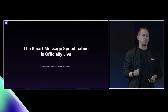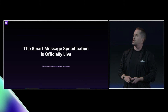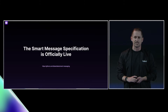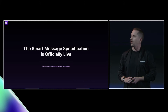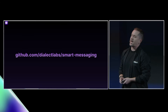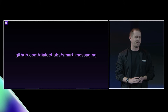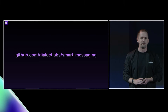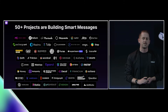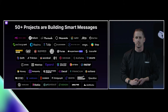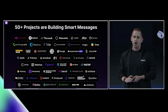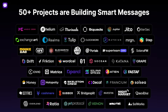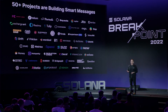We are thrilled to announce that the Smart Message specification is officially live as of this week. We announced this two days ago at Breakpoint. It is in alpha, and it is live on our GitHub open source at dialect labs slash smart messaging. Please go check it out. We're going to be working on this document live and would love feedback. Over 50 projects across the Solana ecosystem have committed to building smart messages with us, covering virtually every possible Web3 use case — NFTs, DeFi, social, DAOs and multi-sigs.